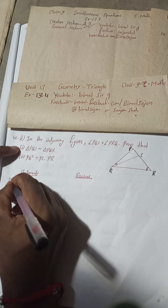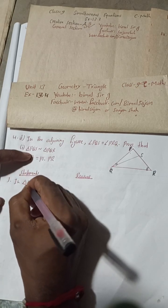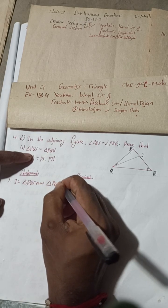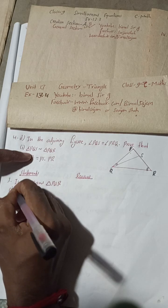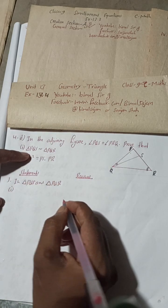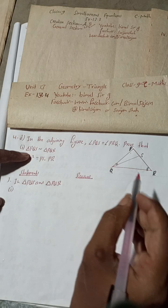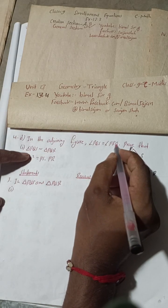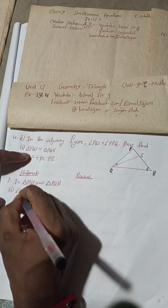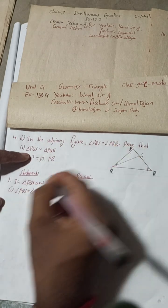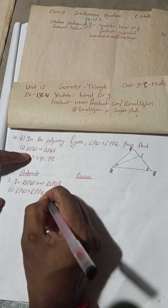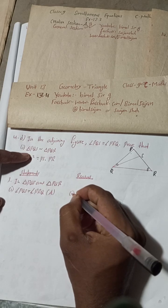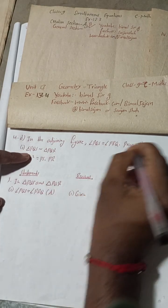Statement 1: In triangle PQS and triangle PQR, angle PQS is equal to angle PRQ. This same line, angle PQS is equal to angle PRQ. Reason for this is given.